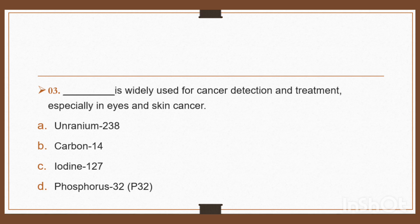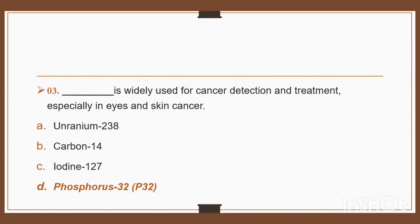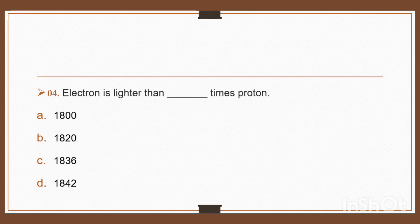Question 3: Which isotope is widely used for cancer detection and treatment, especially in eyes and skin cancer? Option A: uranium-238, option B: carbon-14, option C: iodine-127, option D: phosphorus-32. Phosphorus-32 is widely used for cancer detection and treatment, especially in eyes and skin cancer. Right, option D: phosphorus-32.